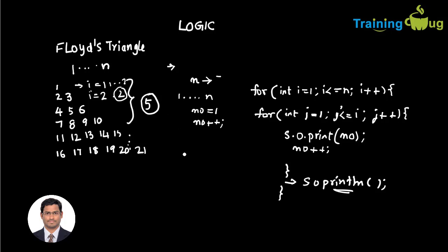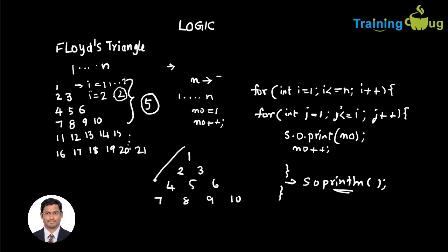In some interviews they'll ask you to print Floyd's triangle in a proper triangle shape like 1, 2, 3, 4, 5, 6, and then 7, 8, 9, 10 like this shape. So whatever shape they want to print, you have to adjust the spaces accordingly. We'll see both the codes — how we are going to write this in our Eclipse.